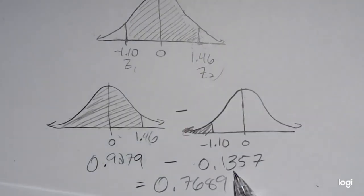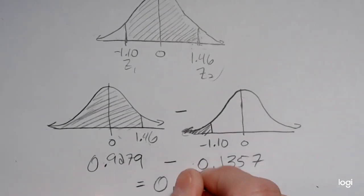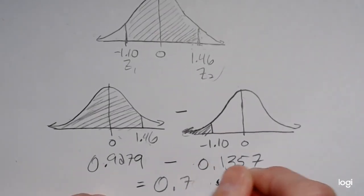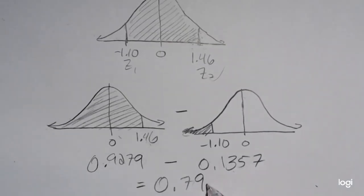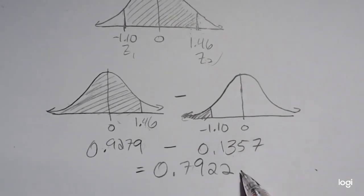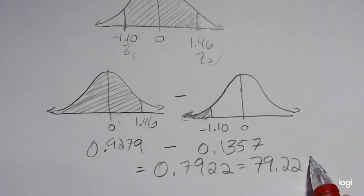So that's how I get 0.1357 here. Doing that subtraction, I get a between area of 0.7922. Or as a percent, that's going to be 79.22%.